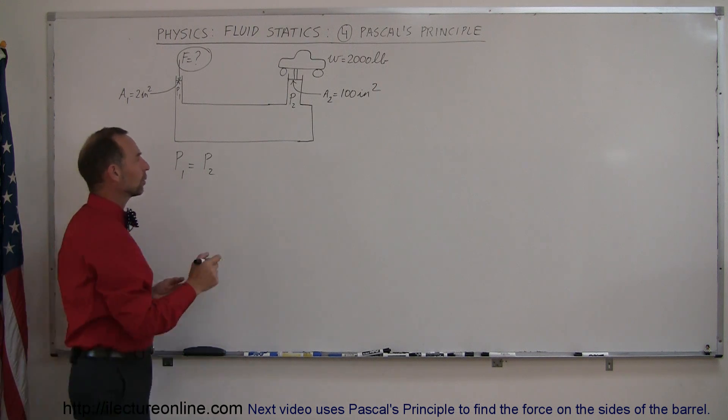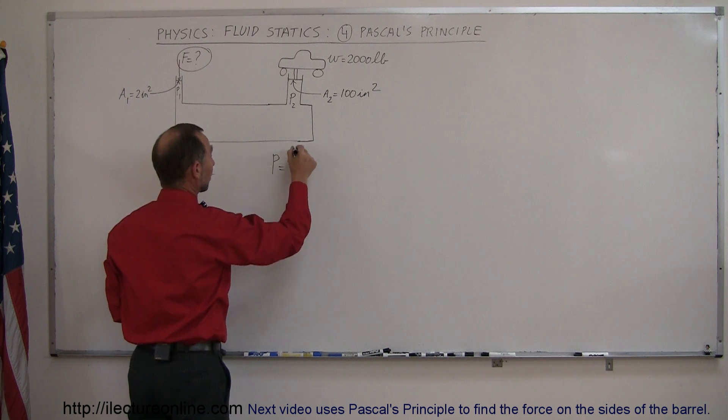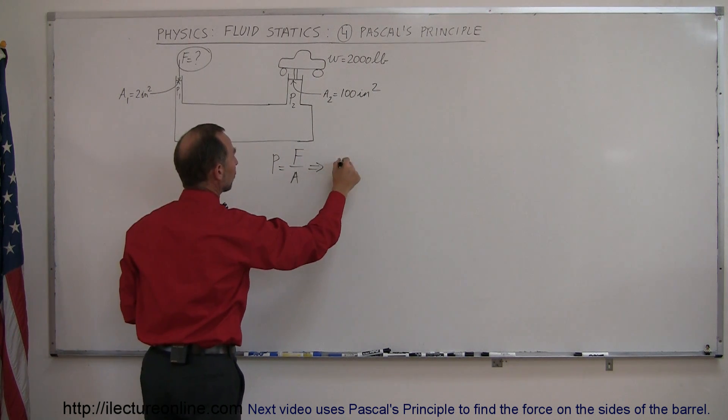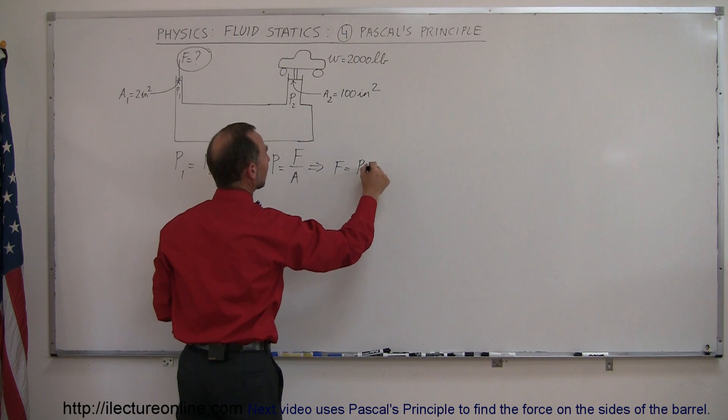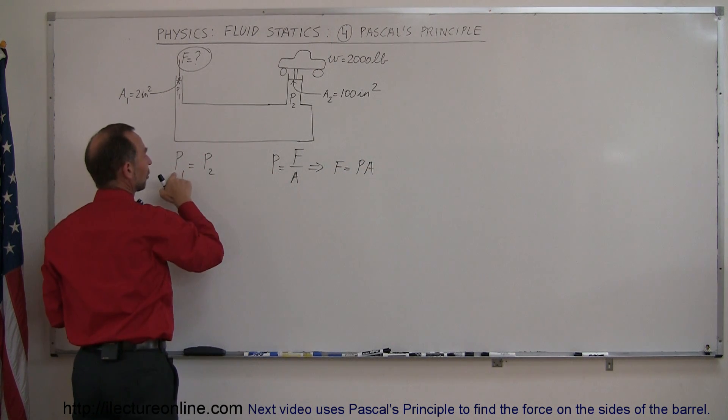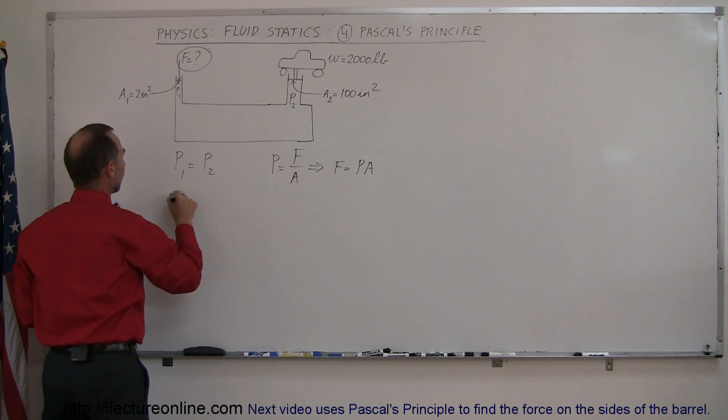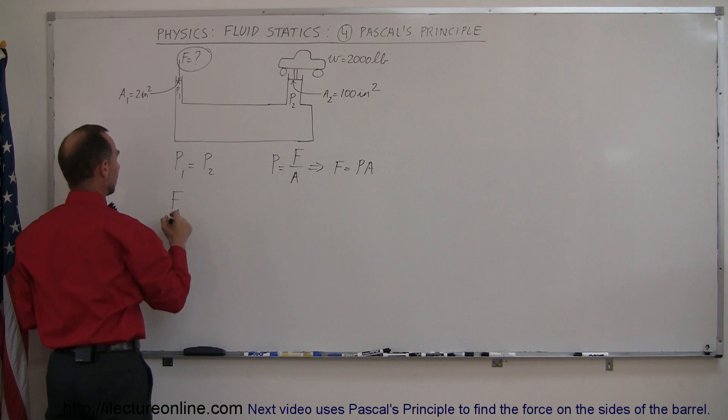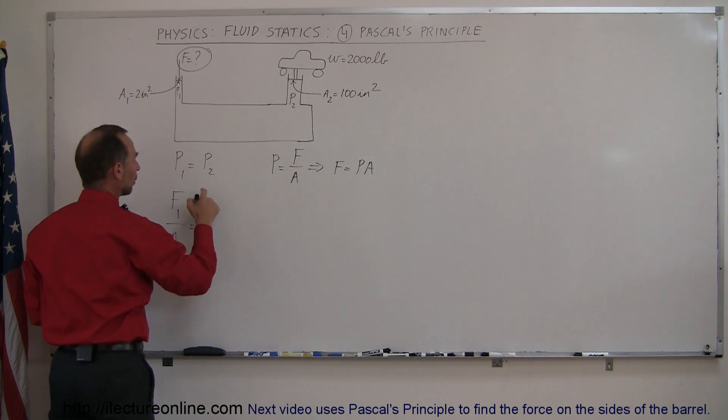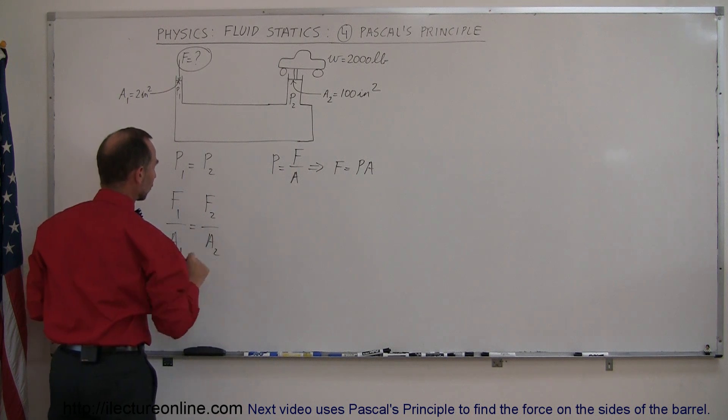Alright, so since pressure is equal to force divided by area, we can then say that force is equal to pressure times area. So in this case, we know that pressure can be expressed as force divided by area. So we're going to then write that force at piston 1 divided by area at piston 1 must equal the force at piston 2 divided by the area at piston 2.